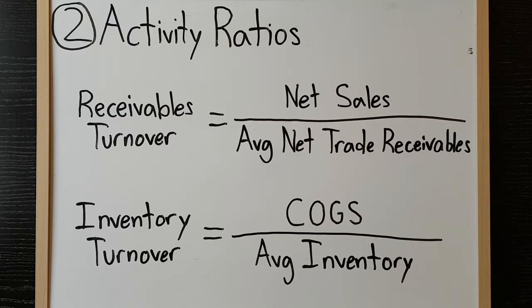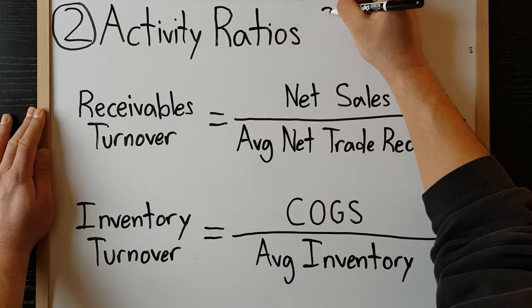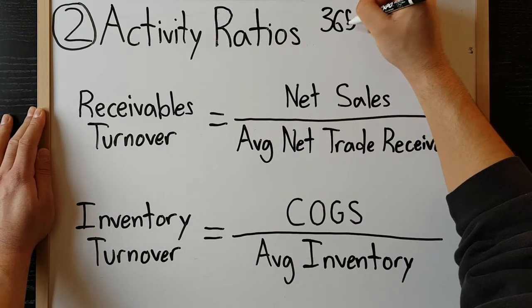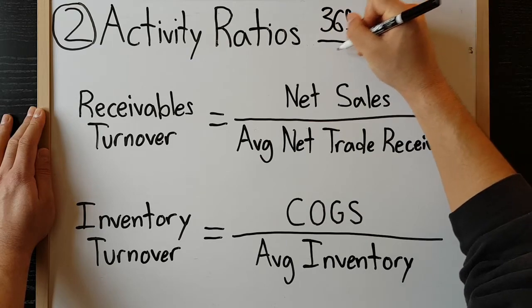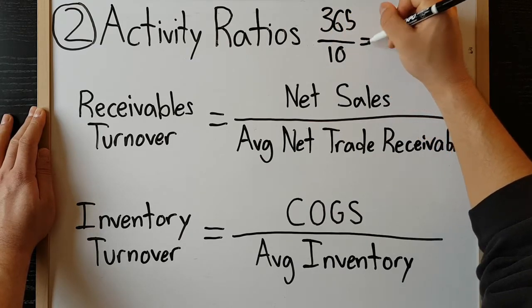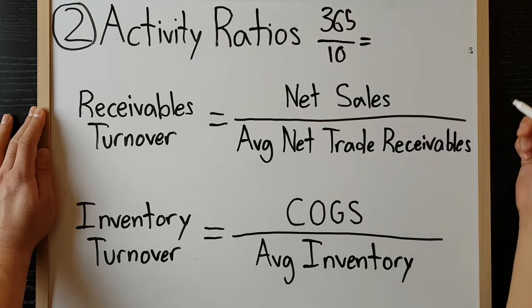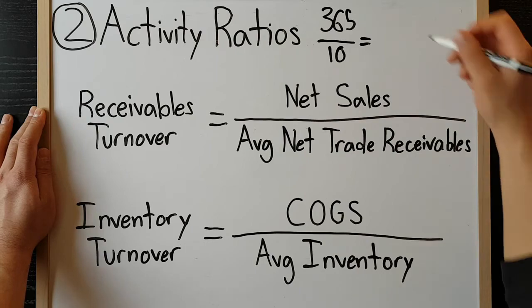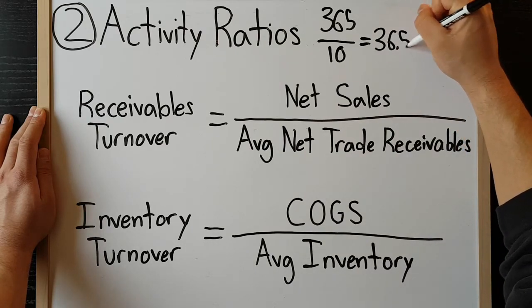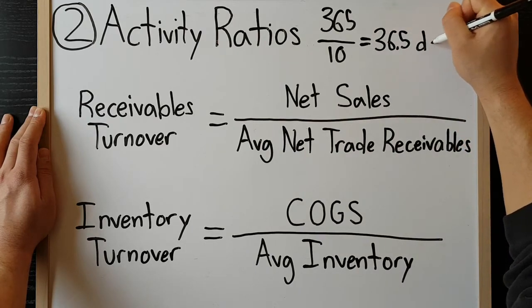For example, if we calculate receivables turnover as occurring 10 times per year, we can take 365, divide by 10 — our previously calculated ratio — and then we can express the turnover ratio instead as occurring every 36.5 days.